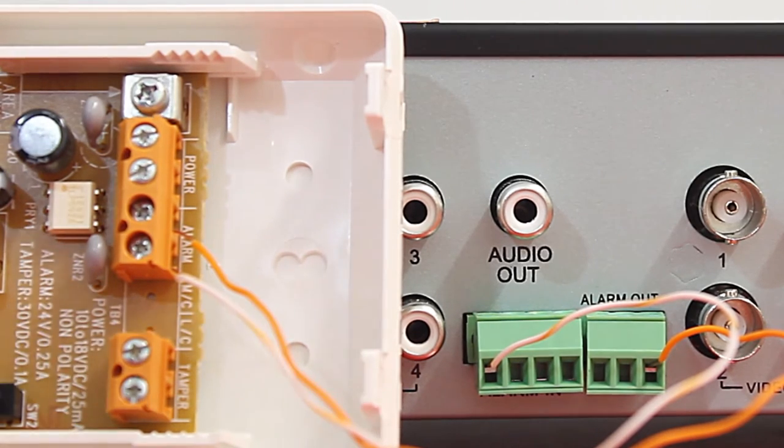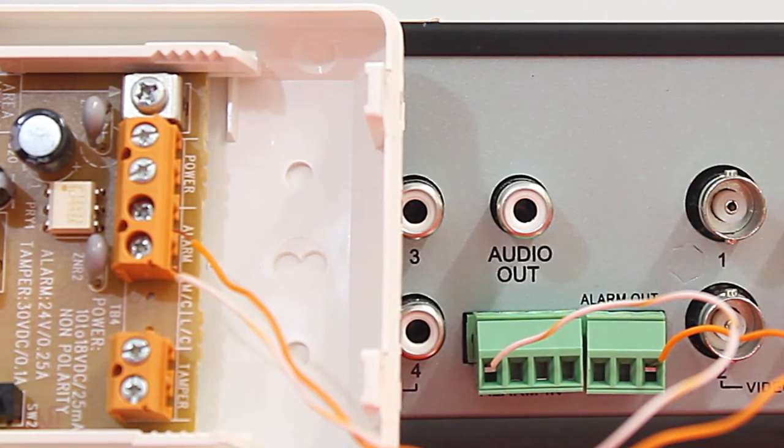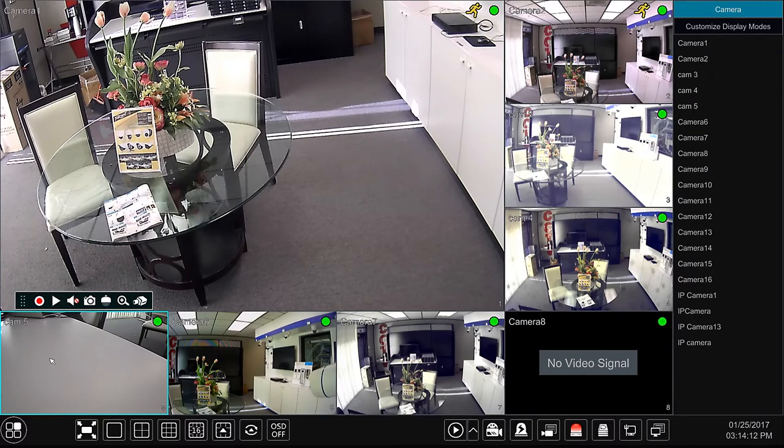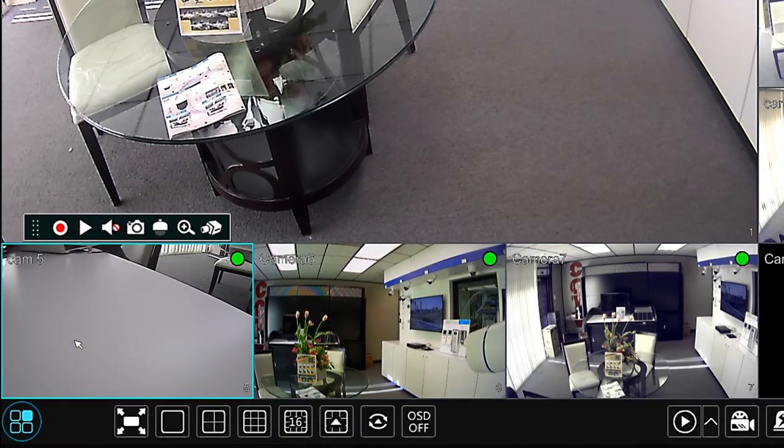Now let's configure the steps that you need to do on the DVR or NVR interface to activate the motion sensor. Now in your DVR or NVR, in order for us to set up the sensor we click under the menu. Then we select settings.